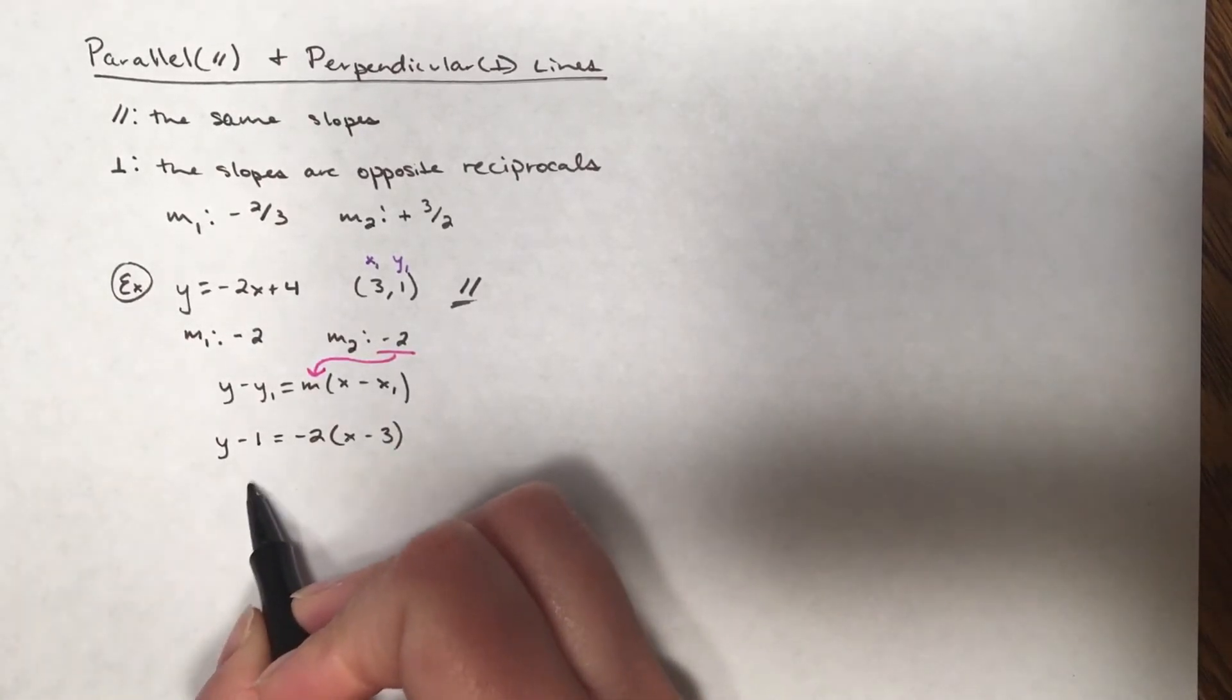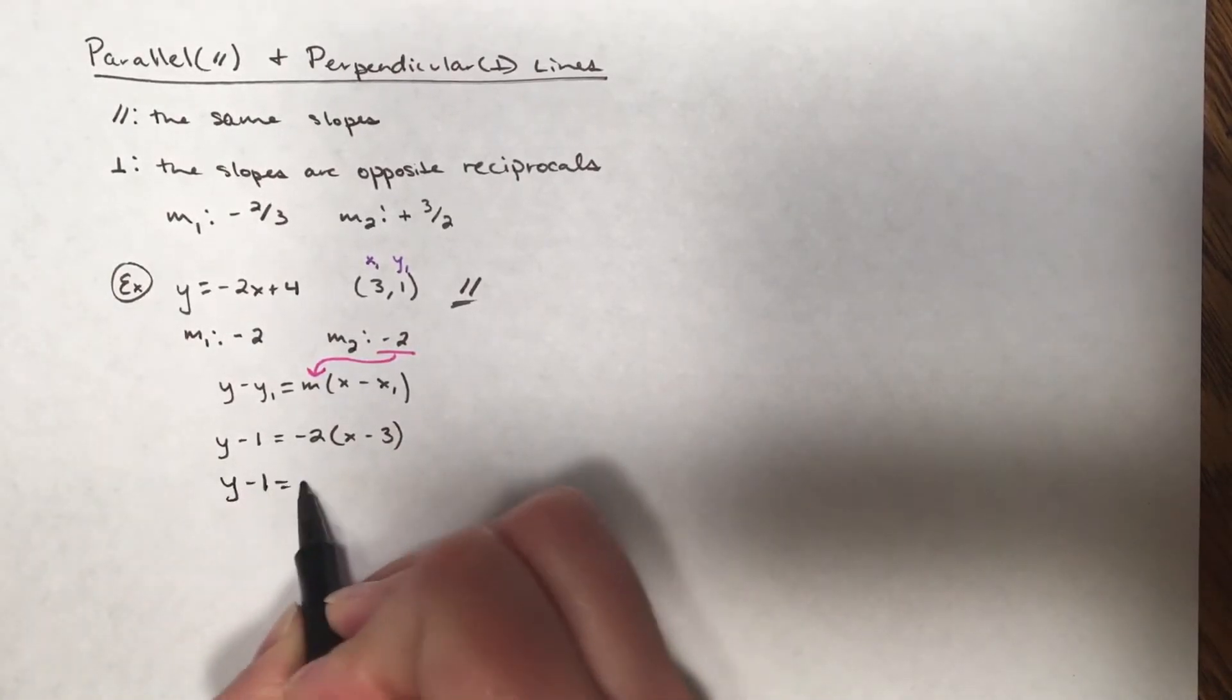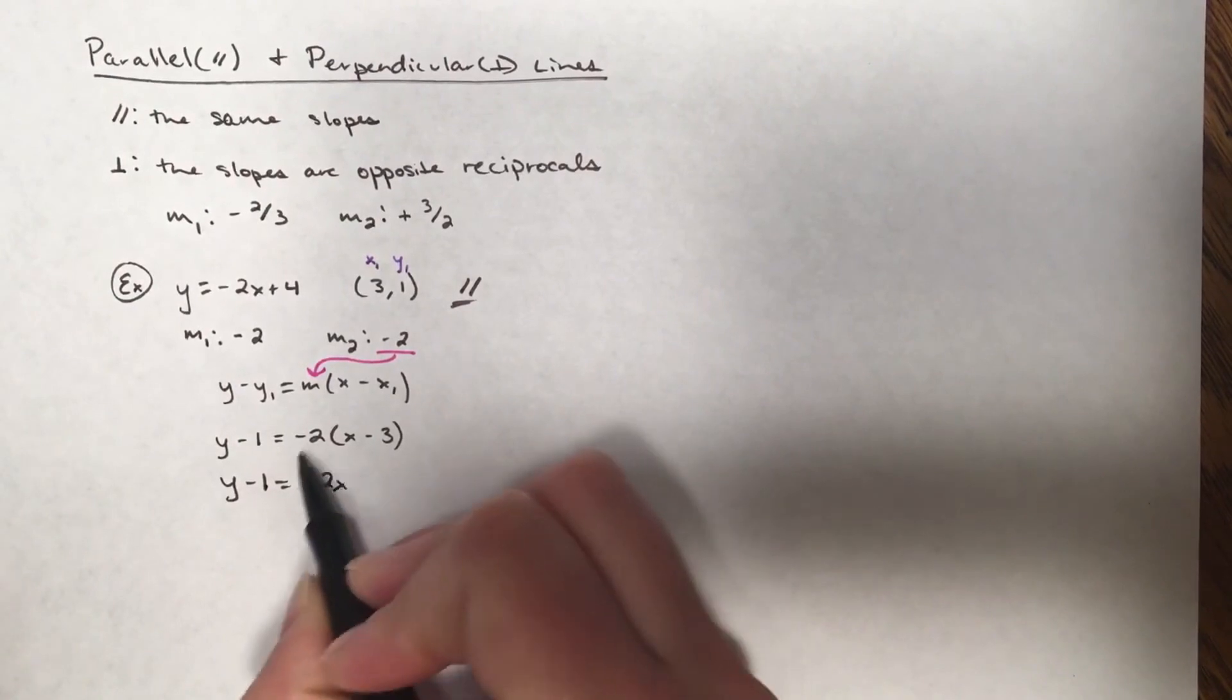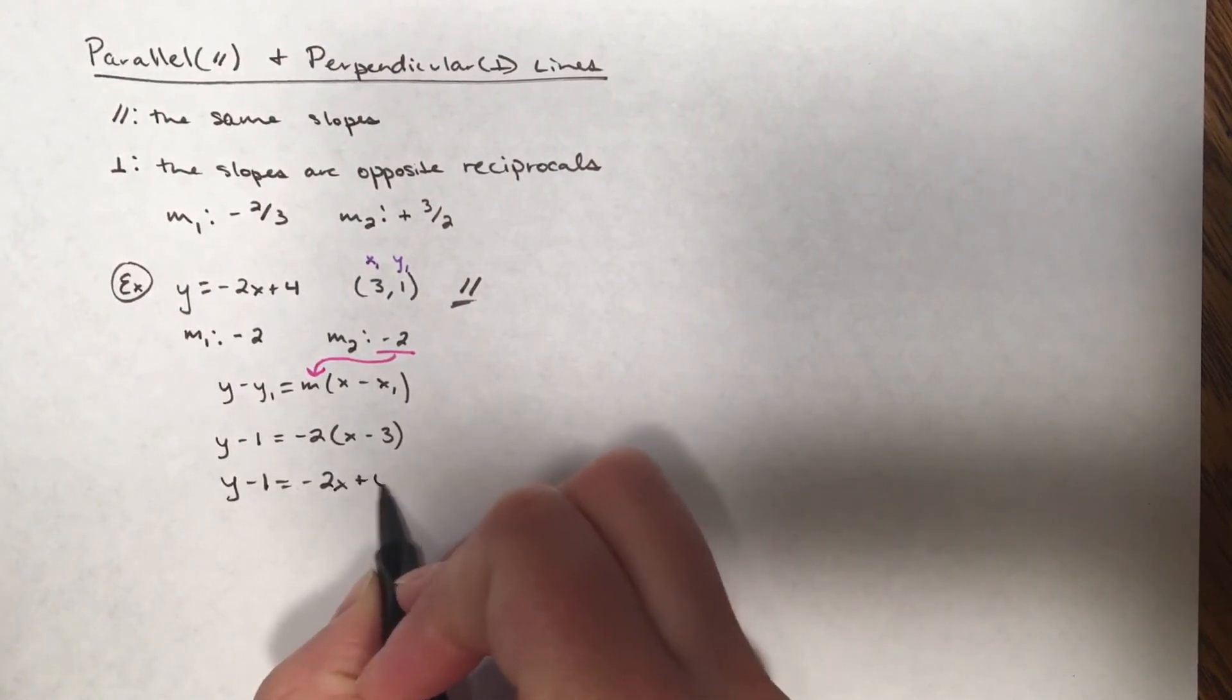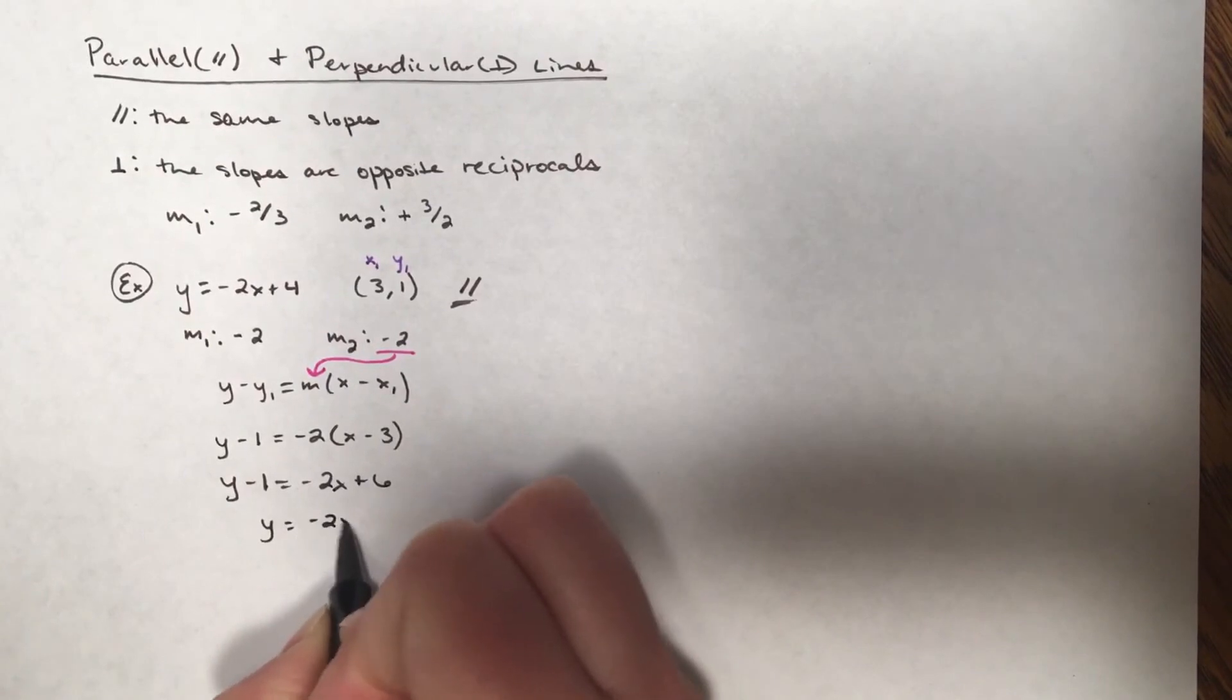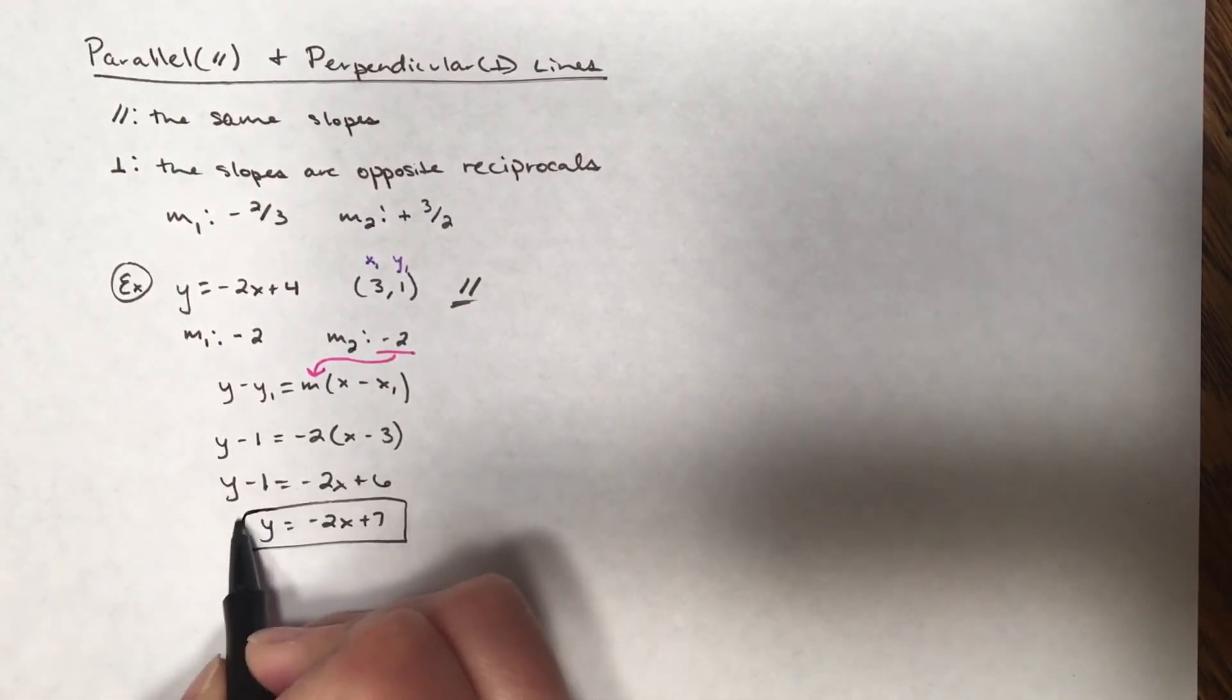After substitution, I distribute the negative 2 to the x and the negative 3, and I get my final equation to be y equals negative 2x plus 7.